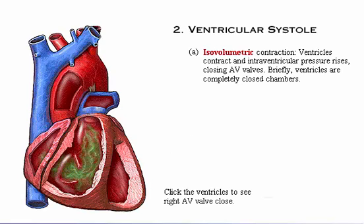The second phase of the cardiac cycle is ventricular systole. As the ventricles contract, intraventricular pressure rises, closing the AV valves. The brief period during which the ventricles are completely closed chambers is the isovolumetric contraction phase.